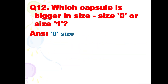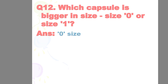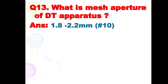Next is: which capsule is bigger in size — size 0 or size 1? The answer is: size 0. Next is: what is the mesh aperture of the DT apparatus? The answer is: 1.8 to 2.2 mm.